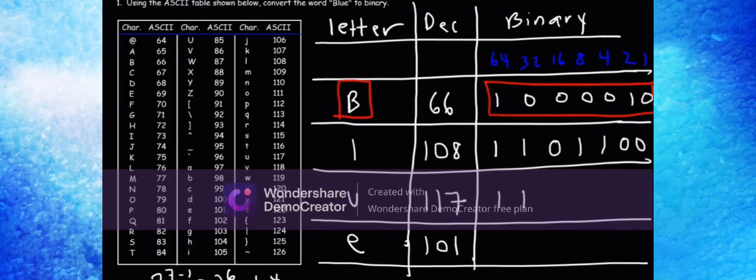Now for U, which is 117, we need 64 and 32, so that's 96. If we add 16 to 96, that gives us 112. We need 5 more, so we need to use 4 and 1. That is the binary equivalent of 117.